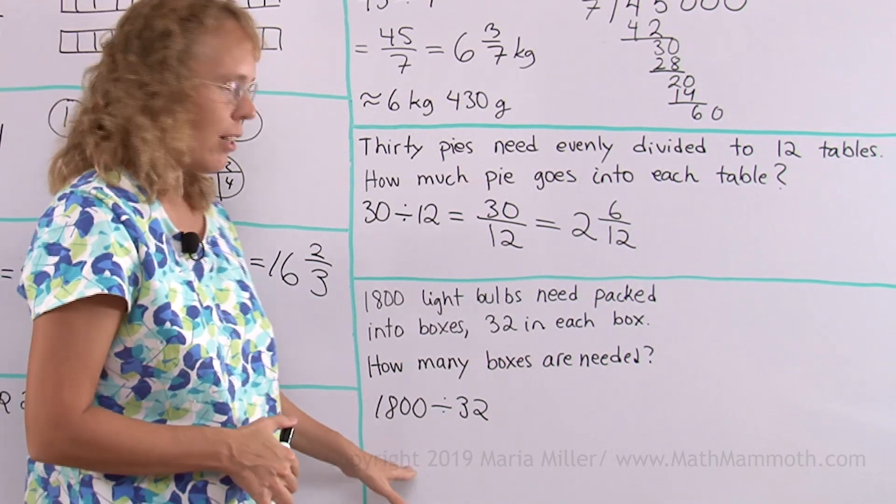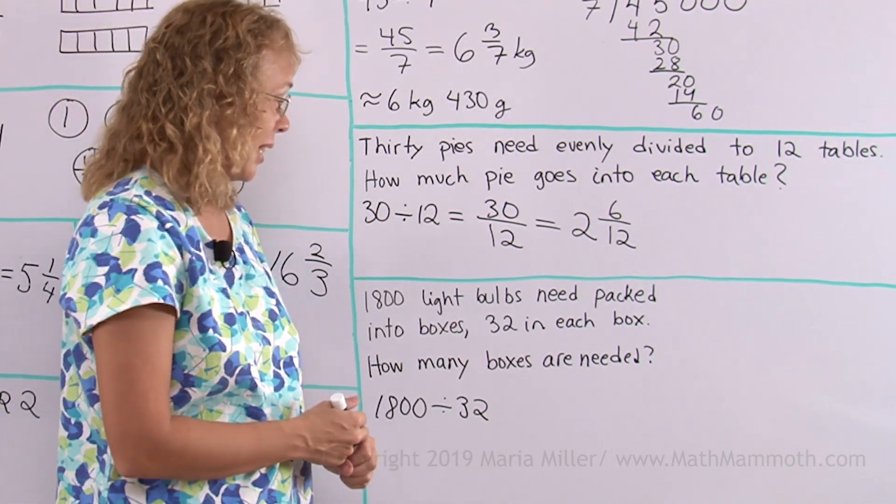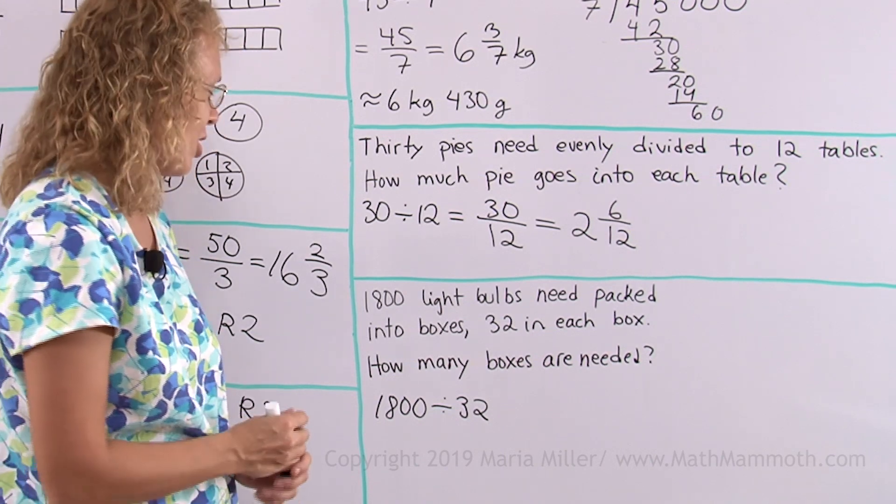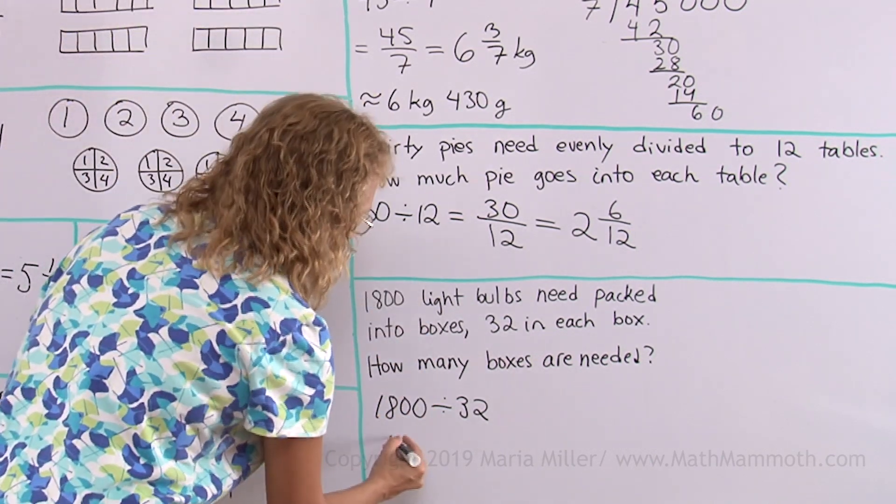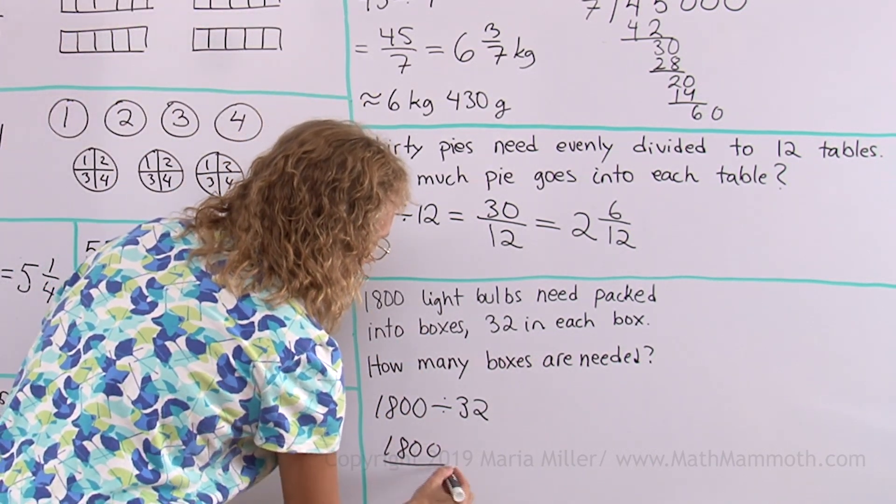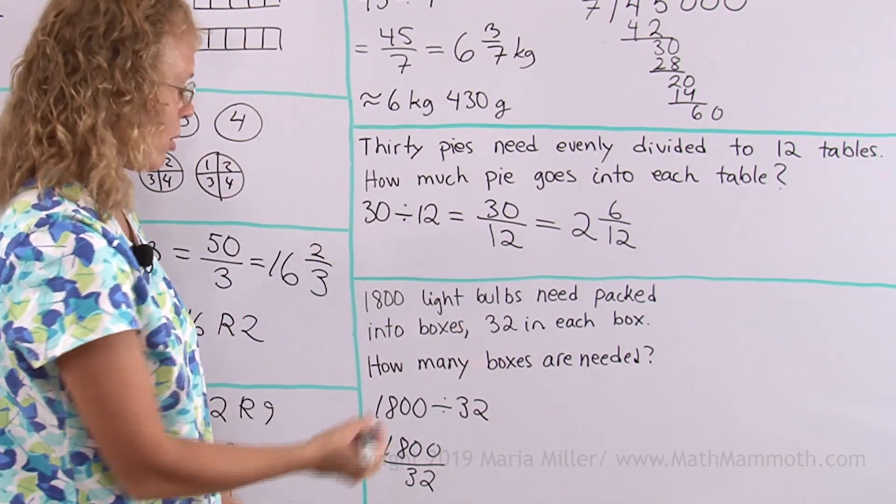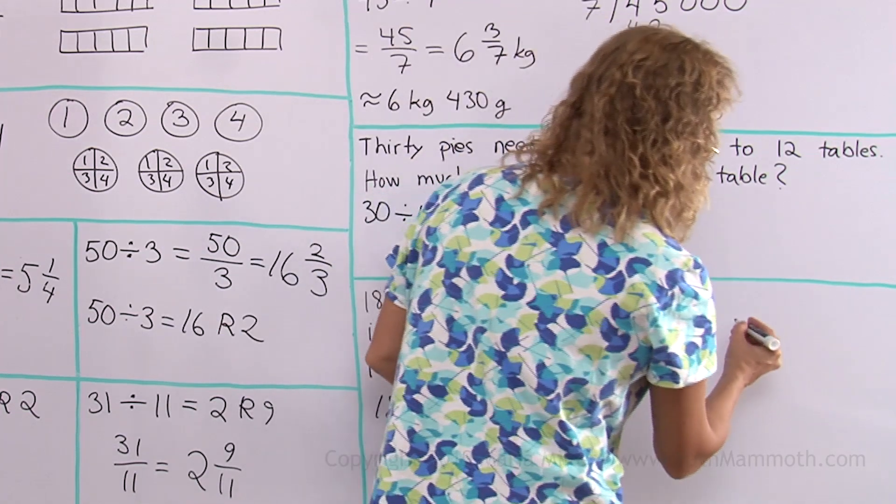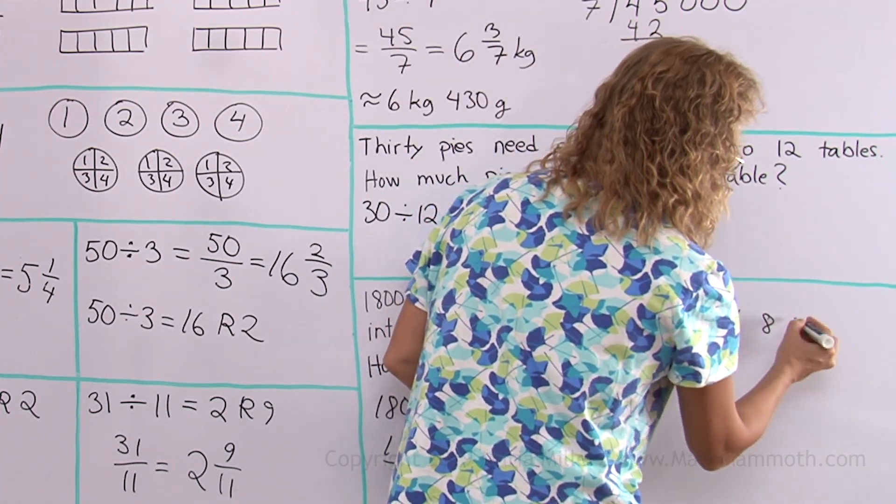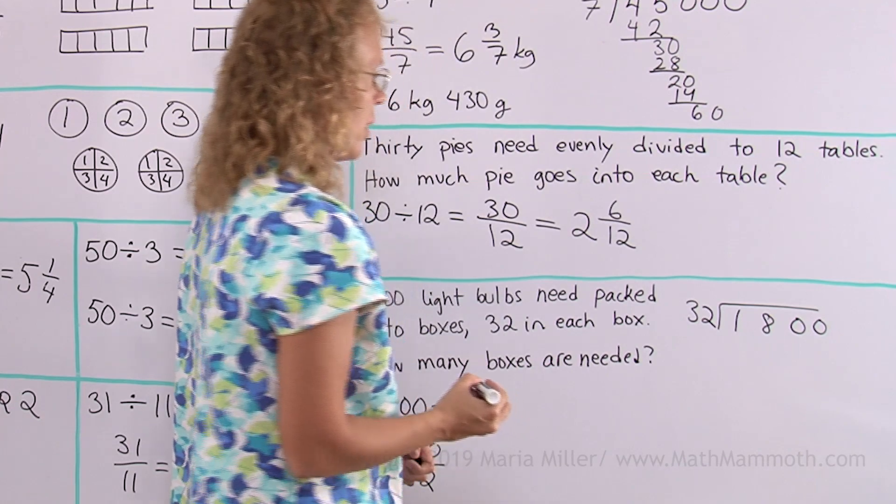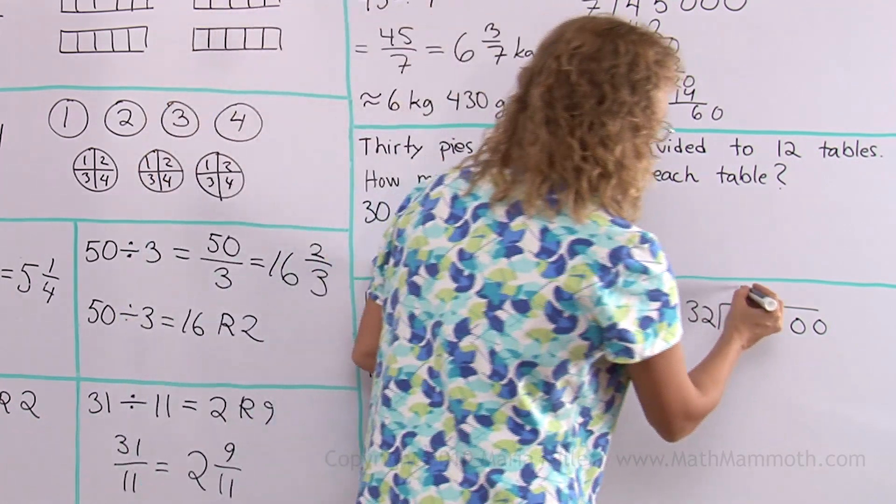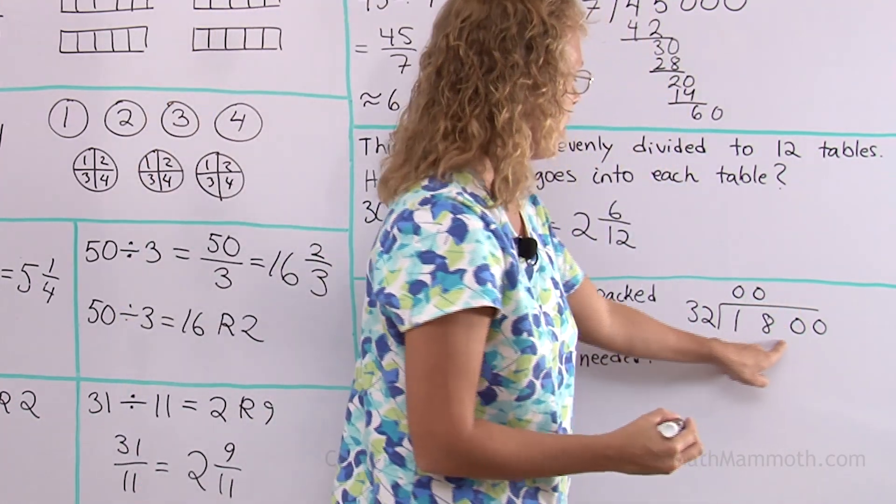So if I write it as a fraction, I can, but I still will need to use long division to actually get this. I could write it like that too, but either way, I need to now divide using long division to get anywhere. Let's try it here. 32. 32 goes to 18, zero times, zero times, okay? 180.